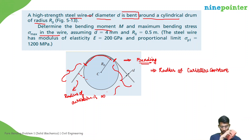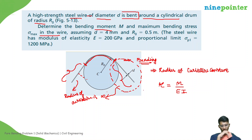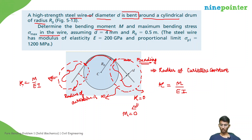We already know that kappa equals M divided by EI. In the straight portions, the curvature kappa is zero, and EI has some finite value, so from this we get M equals zero in those straight regions. Similarly, in the other straight region, kappa is also zero, giving M equals zero.